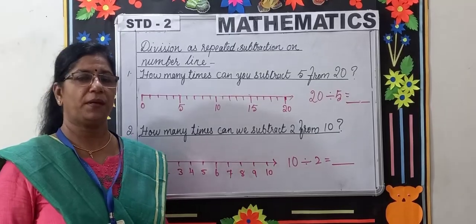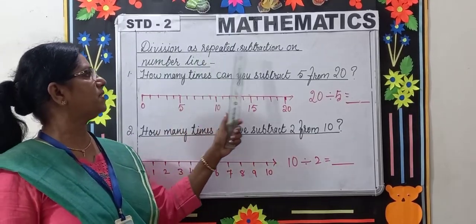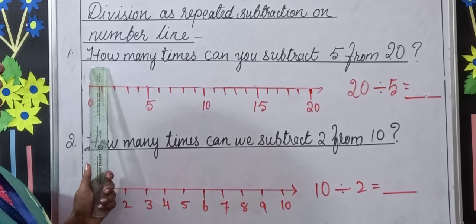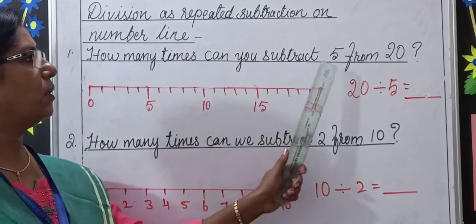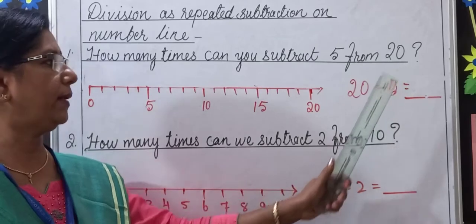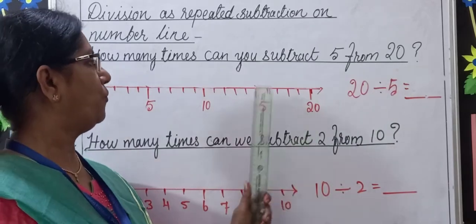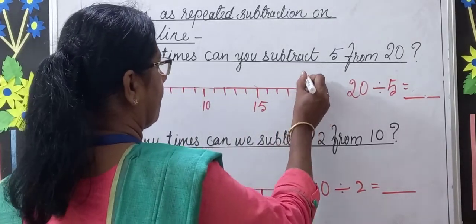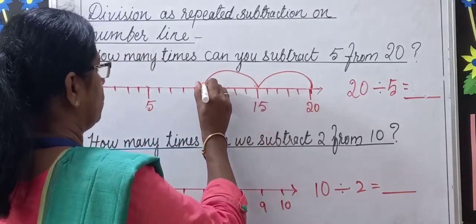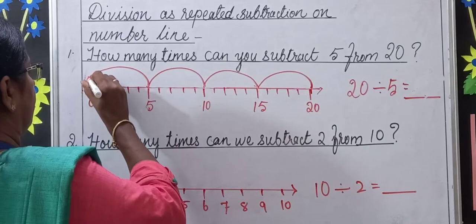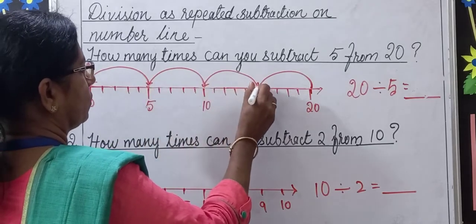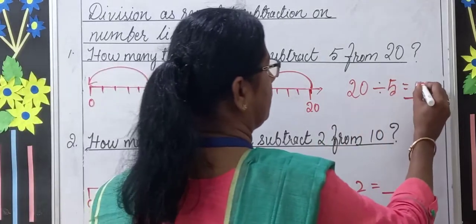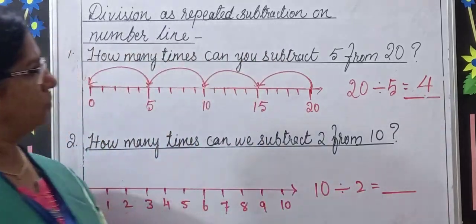Our next topic is division as repeated subtraction on the number line. First question: how many times can you subtract 5 from 20? Start at 20 and hop 5 to the left, going 4 times — you reach 0. We jumped 4 times, so 20 divided by 5 equals 4.